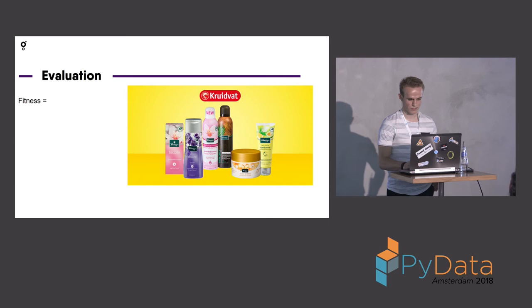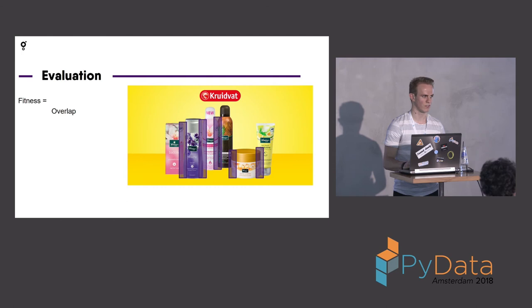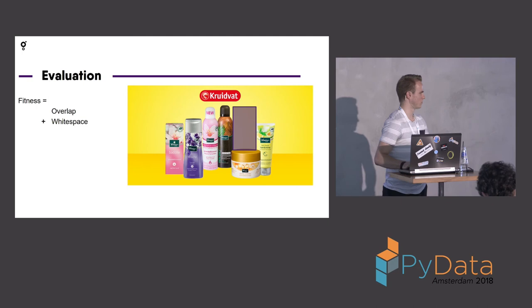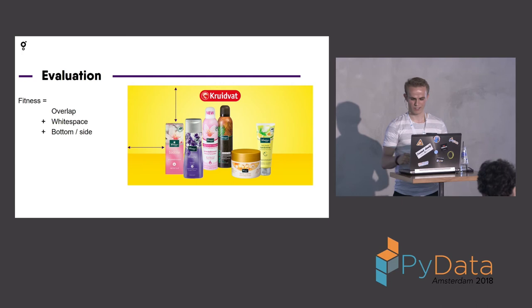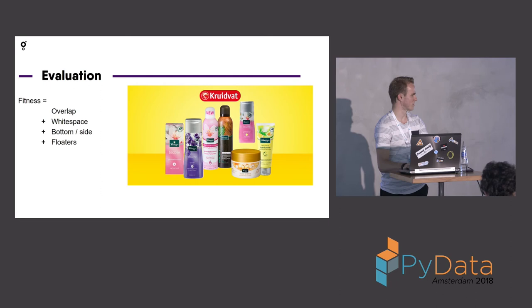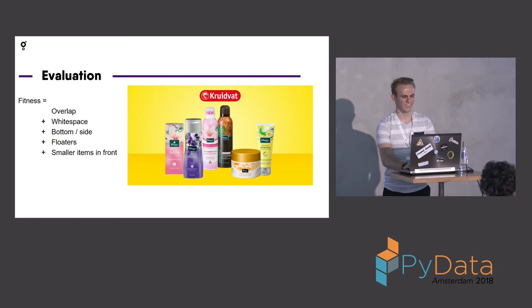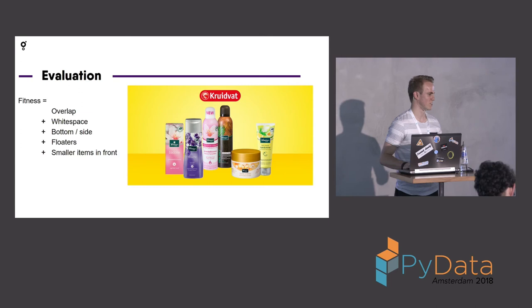The fitness of a composition is based on multiple components. You loop over every item and check its attributes. The first is overlap with other items — it should not be too much, but also not too little, so that you see white space, which is actually the next attribute. There should not be too much white space behind the composition because that looks ugly. There should be enough space to the bottom and the side, but items should also not be off canvas. No floaters — if you have an extra item it should not float. And smaller items should always be in front, so the smaller jar should be in front, otherwise it gets covered by a bottle.